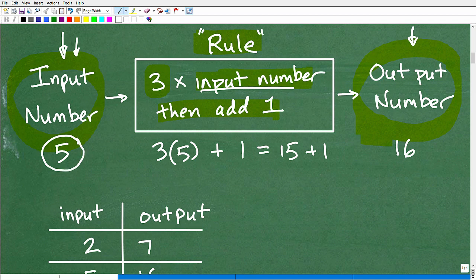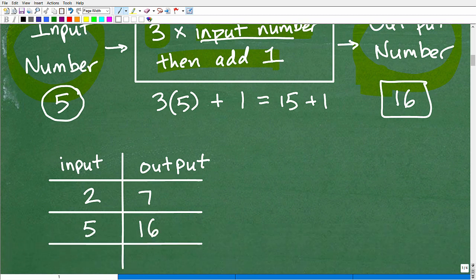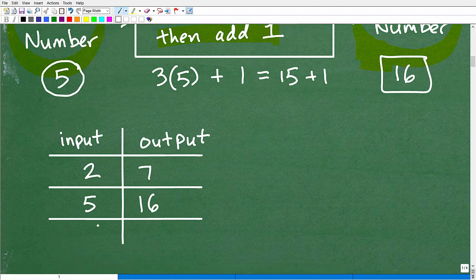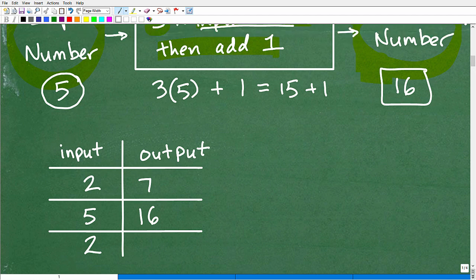Now there's some specific things that we need to kind of emphasize about a function. And that is the following. Okay. Every input number, every input value, only when we have a function, okay, and in mathematics, every input number has only one unique output number. Okay. So for example, all right, so here, this two, all right, I got a seven. So let's say I said, hmm, finish this table up and let's do this value of two again. All right. And I plugged it back into this rule. I couldn't get like 13.